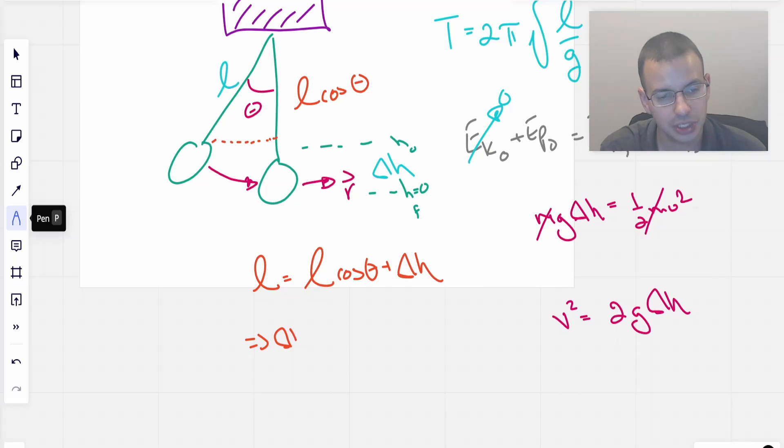And this whole length here is L, therefore, I could write L equals L cosine of theta plus delta H. Rearranging this, we get delta H equals L minus L cosine of theta. Factoring out L, we get L times 1 minus cosine theta. Okay.